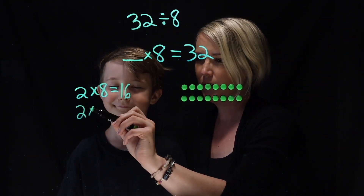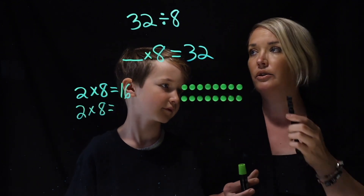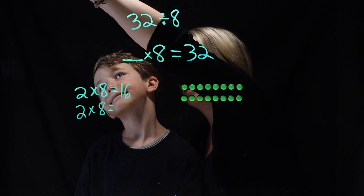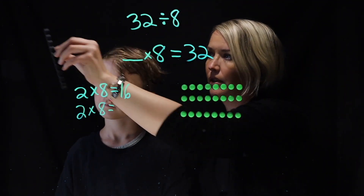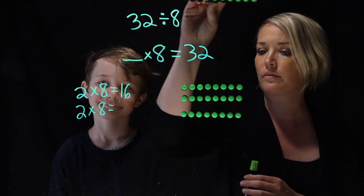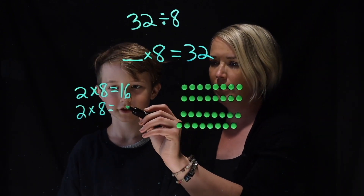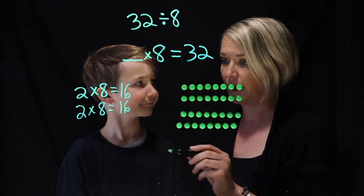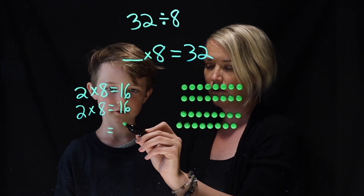So then we're going to do another 2 times 8. Let's bring them up — another 2 times 8. So there's one 8, and we'll grab another one. So what's that equal to? 16. So now we're going to do 16 plus 16. So 16 plus 16 — what does that equal? It's equal to 32.